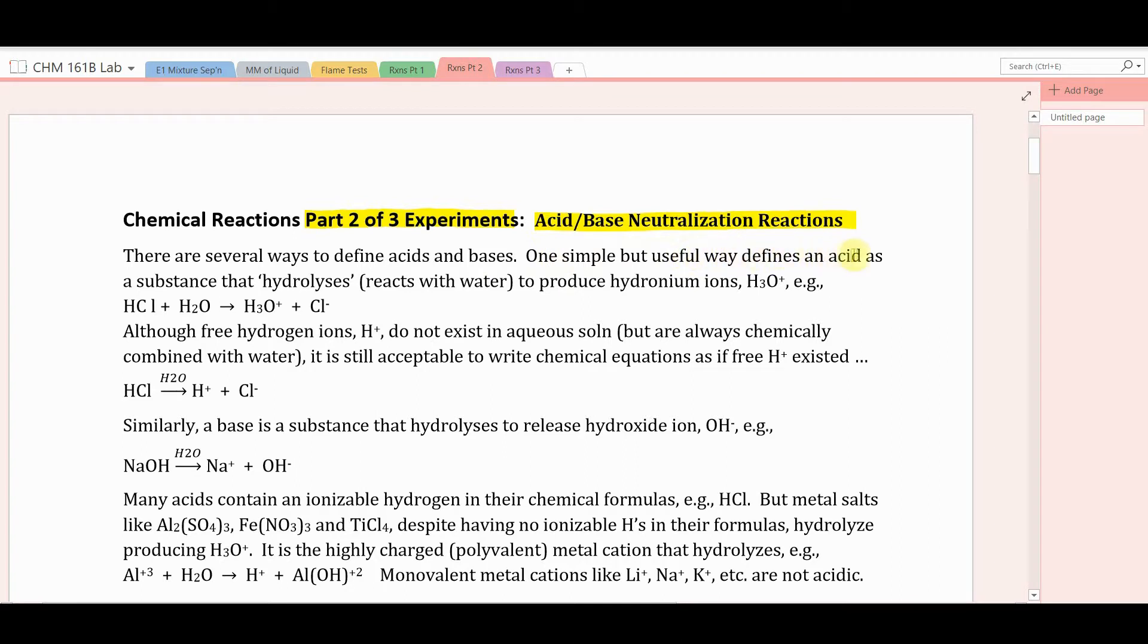One simple but useful way defines an acid as a substance that hydrolyzes, and that means reacts with water, to produce hydronium ion, H3O+. For example, hydrogen chloride is a gas which, when dissolved in water, produces hydronium ion and chloride ion. Now although free hydrogen ions, just H+, do not exist in aqueous solution, they're always chemically combined with water to make hydronium ion, it's still acceptable and often easier to write chemical equations as if free hydrogen ion existed. Like this, HCl in H2O produces hydrogen ion and chloride ion.